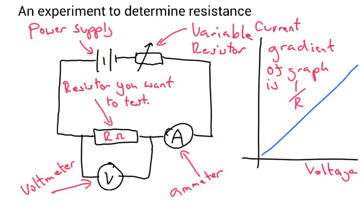Now, one thing you need to be aware of for your exam is an experiment to determine resistance. The equipment that you will need: you will need a power supply, which provides electrical energy to your circuit. You need a variable resistor.